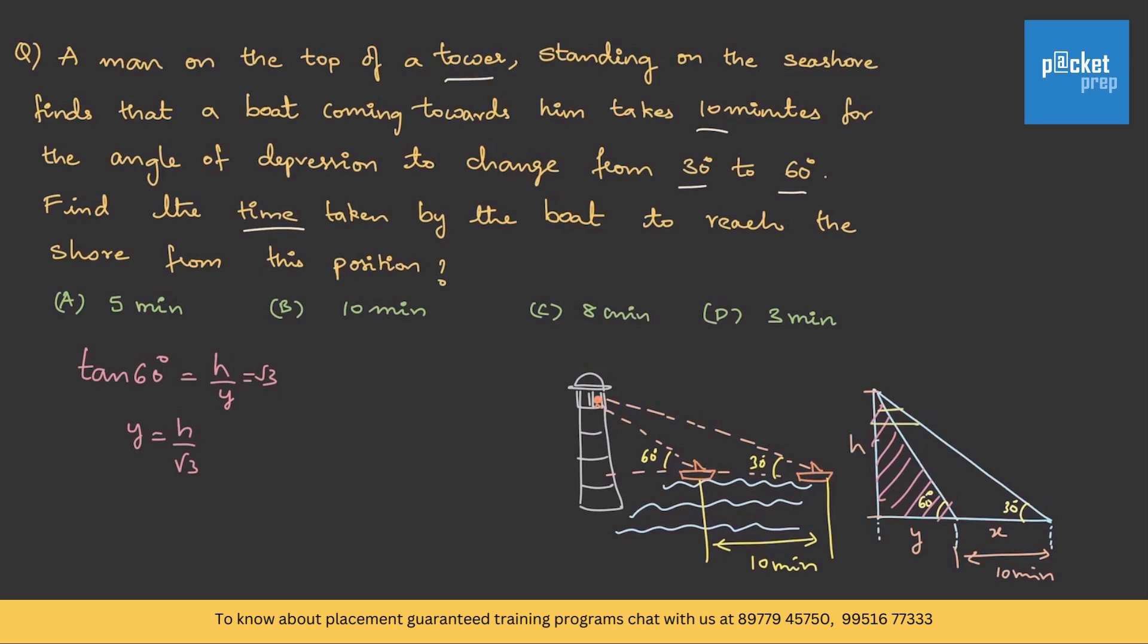Now let me take this whole triangle. From this, I can write tan 30, because the angle here is 30 degrees, is opposite, that is h by adjacent. Here the adjacent is this whole thing, that is x plus y. Tan 30 value we already know, 1 by root 3 equals h by x plus y. Or x plus y is root 3 h.